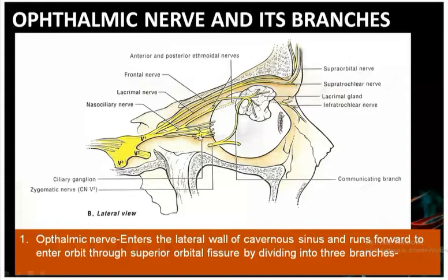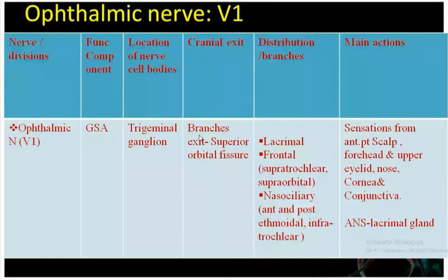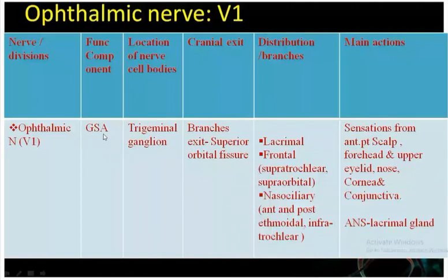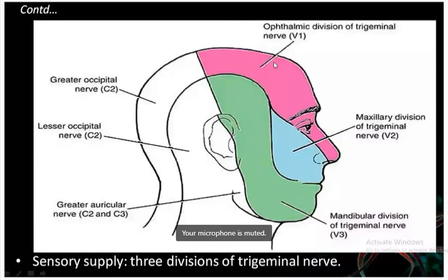Summary table for the ophthalmic nerve (V1): it is pure sensory with functional component as general somatic afferent. The three main branches are lacrimal, frontal, and nasociliary; they exit through the superior orbital fissure. Frontal divides into supratrochlear and supraorbital; nasociliary gives anterior ethmoidal, posterior ethmoidal, and infratrochlear branches.